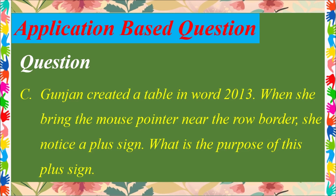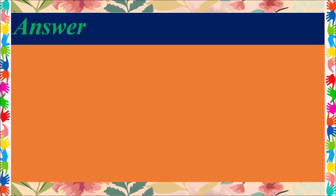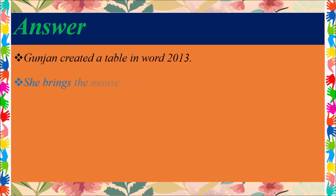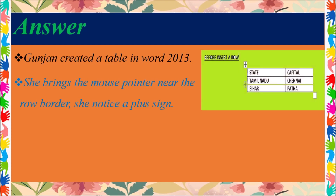Answer: Kunjan created a table in Word 2013. She brings the mouse pointer near the row border and notices a plus sign. In this situation, when you touch the row border available at the left margin side of the table, a plus sign appears to notify you.